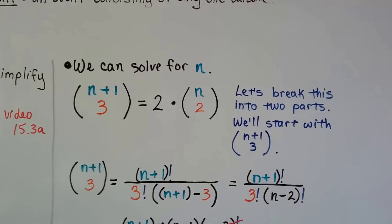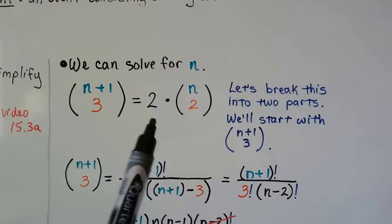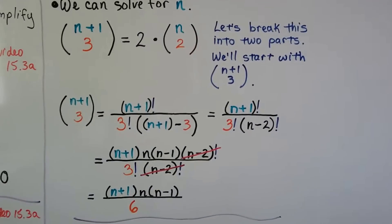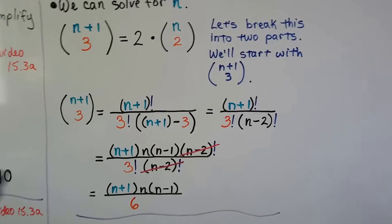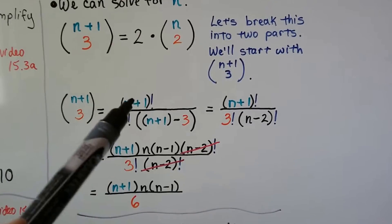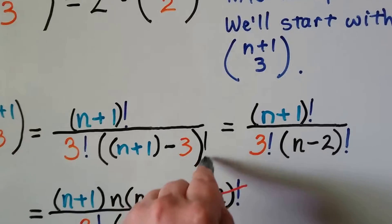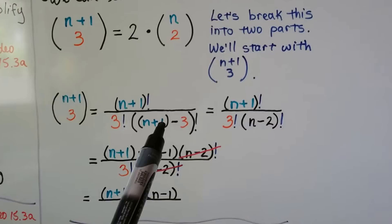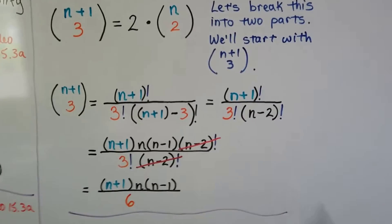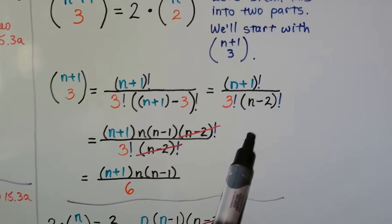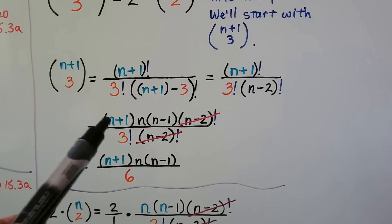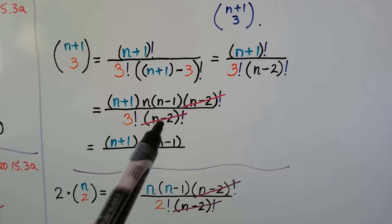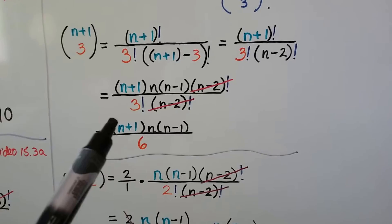Now we can solve for n. We have n plus 1 choose 3 equals 2 times n choose 2. We'll break this into two parts, starting with n plus 1 choose 3. Following our formula, we have n plus 1 factorial over 3 factorial times n plus 1 minus 3 factorial. Since n plus 1 minus 3 gives n minus 2, we write n plus 1 factorial with a factor of n minus 2: n plus 1 times n times n minus 1 times n minus 2 factorial. Canceling the common factorials leaves n plus 1 times n times n minus 1 over 6.